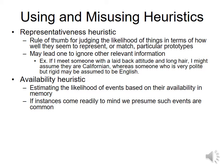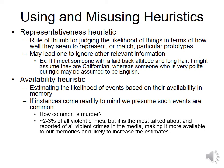The availability heuristic means estimating the likelihood of events based on how quickly they come to mind. If you've been hearing about troubles in Chicago, you may choose not to visit because that information comes quickly to mind. But if you go somewhere like Gary, Indiana instead, that's not really much safer. Murder is actually only about 2-3% of all violent crimes, but after watching the news it feels very common. Judging travel decisions based on murder rates from media coverage shouldn't be your only consideration.